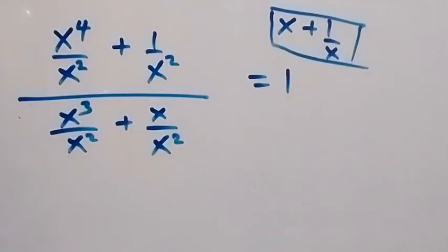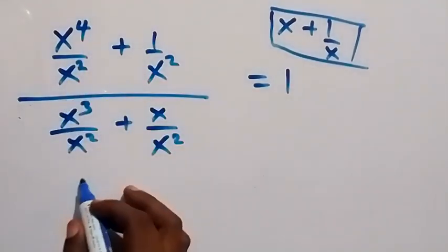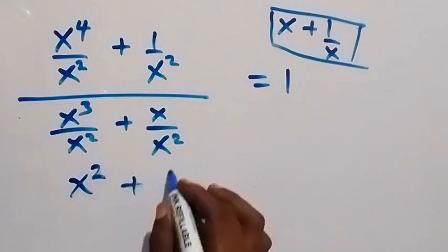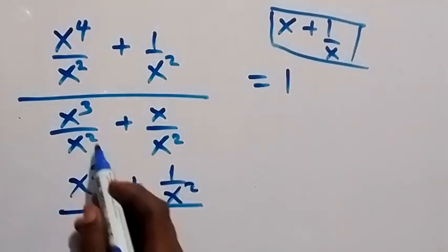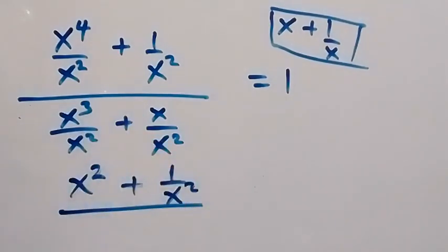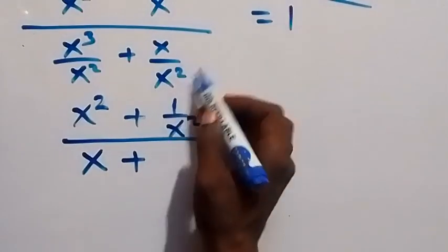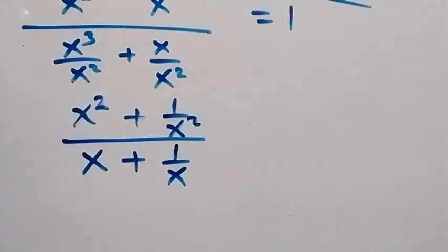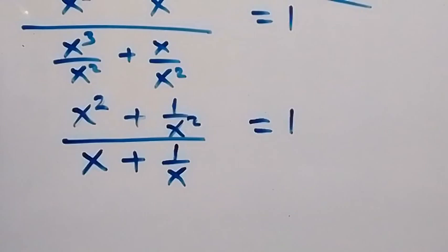This reduces as follows: in the numerator, subtracting the powers gives x squared, plus 1 over x squared. In the denominator, subtracting 2 from 3 leaves x, plus one of the x's cancels to give 1 over x, which equals 1.